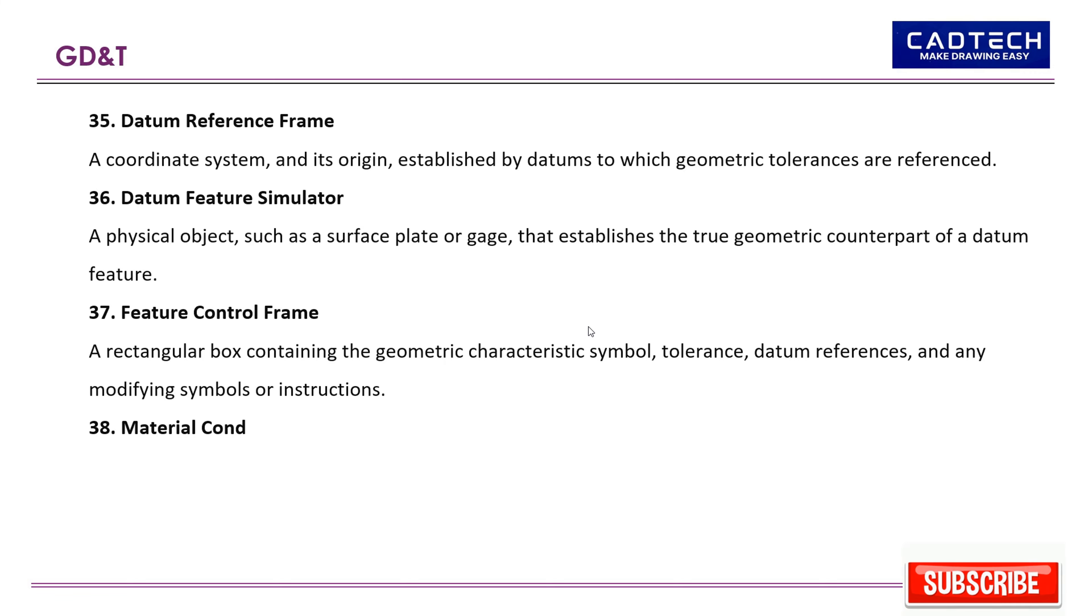38. Material condition symbol: A symbol used in GD&T to indicate whether a feature's tolerance is based on its MMC, LMC, or regardless of feature size (RFS). 39. Regardless of feature size (RFS): A condition where the tolerance of a feature is not dependent on its size.